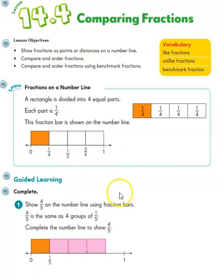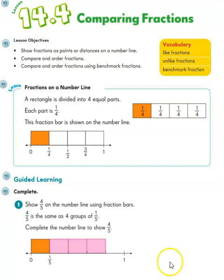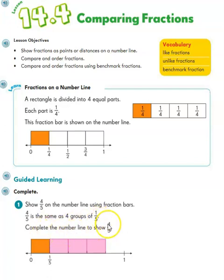That was two different ways to show the same thing. Now let's move to number one: show four-fifths on the number line using fraction bars. It tells us four-fifths is the same as four groups of one-fifth, and we need to complete the number line to show four-fifths.